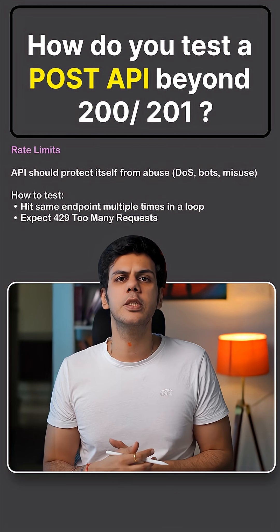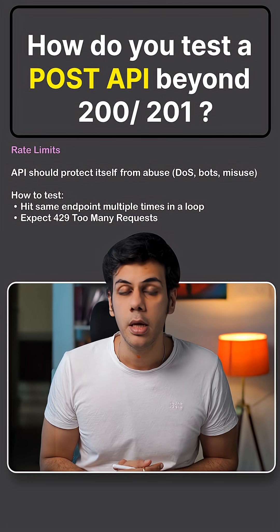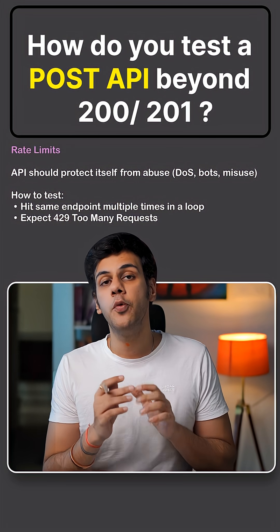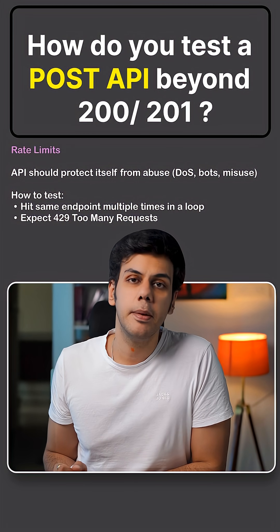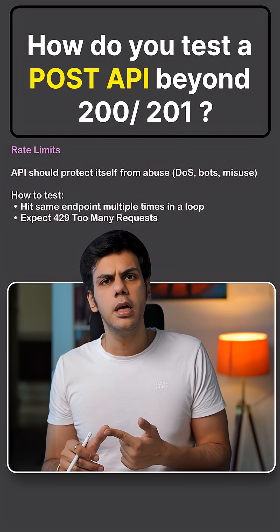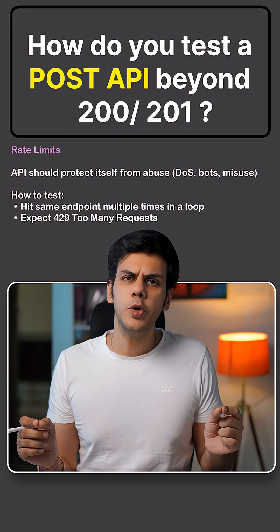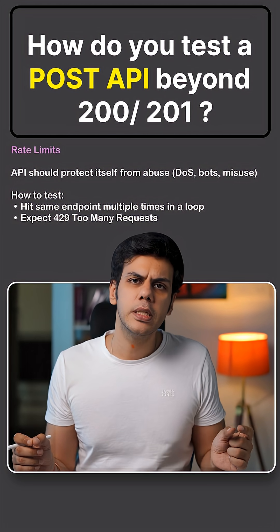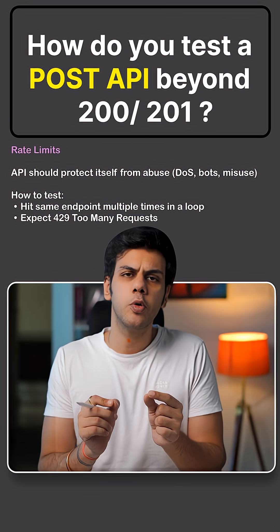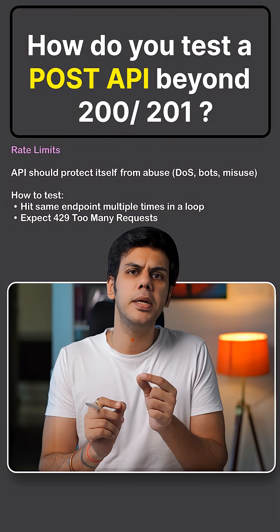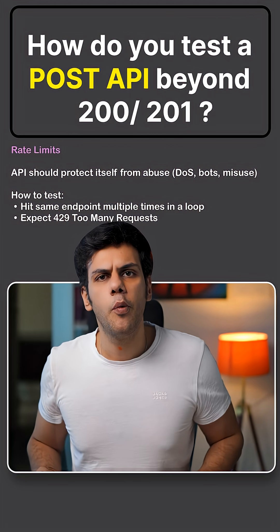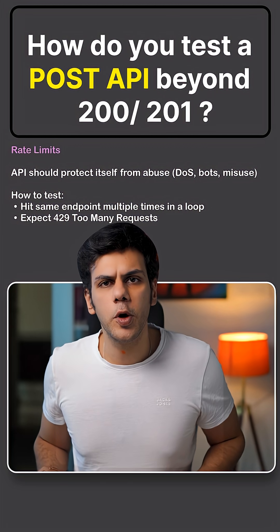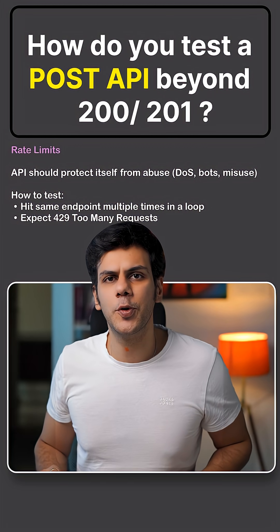Fifth is going to be rate limiting. You want to make sure your APIs are immune to DDoS as well as bot attacks. In a short period of time, you make multiple API requests and check whether you're getting a 429 status code or not.